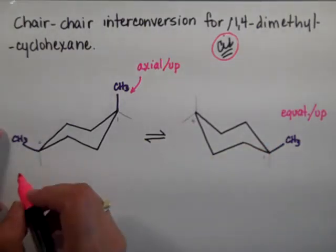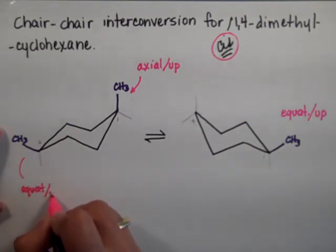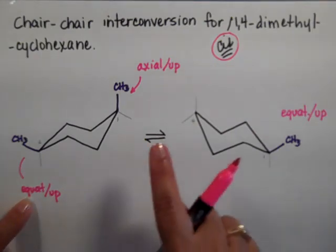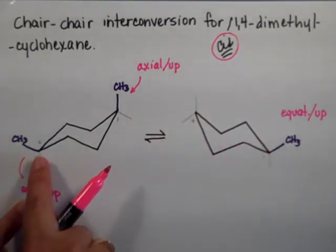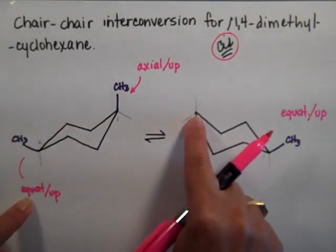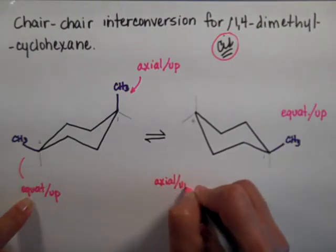The second methyl is equatorial up. So equatorial up is going to go to axial up. So we push this carbon all the way up. So it's this one right here.